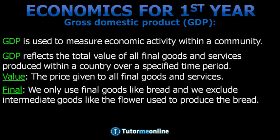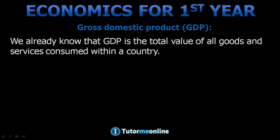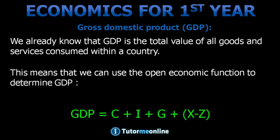The word 'final' means we only use final goods, like bread, and we exclude intermediate goods, like the flour used to produce the bread. 'Within a country' refers to all goods and services produced within the borders of a country. GDP equals C plus I plus G plus X minus Z, using the open economy function to determine GDP.